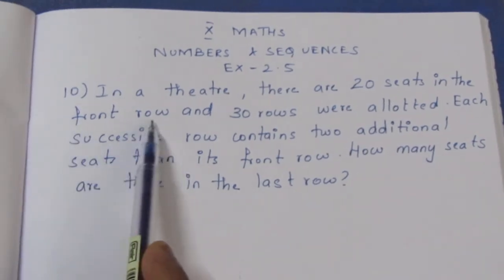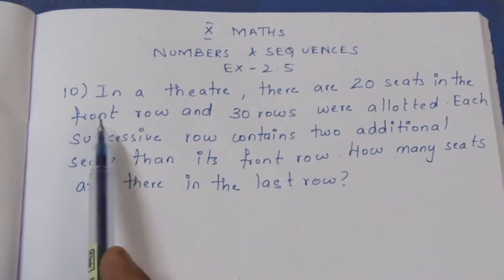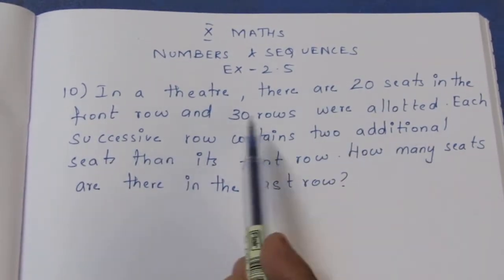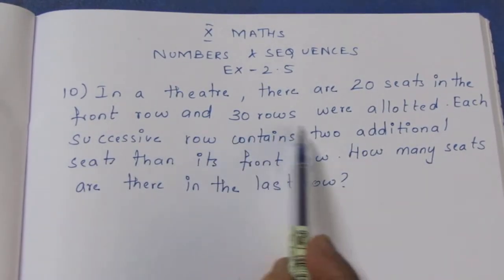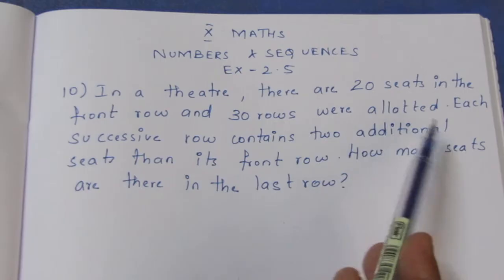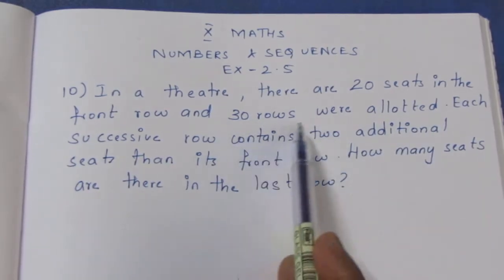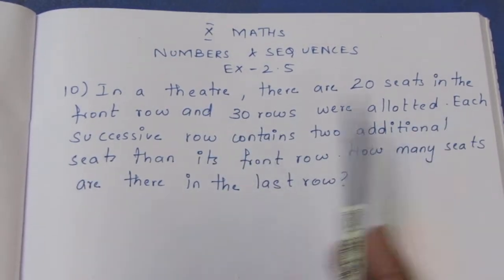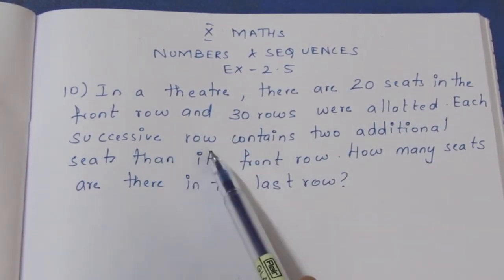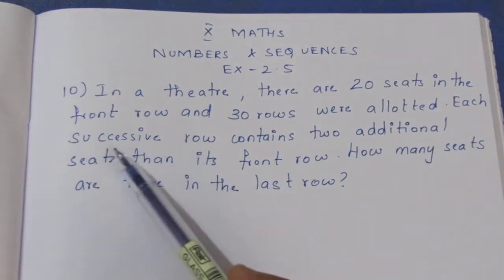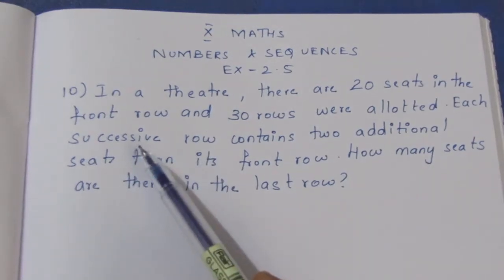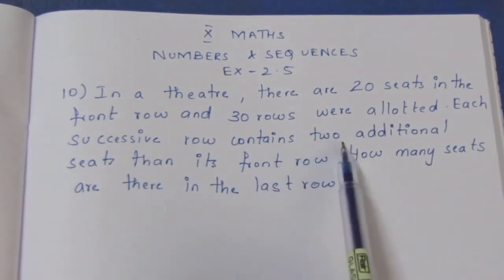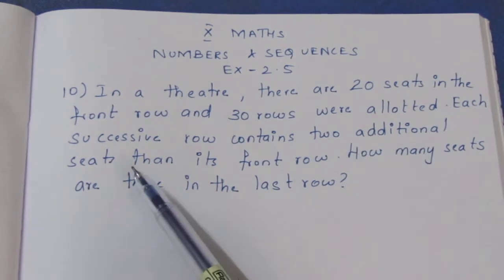The front row is the first row. In the first row, there are 20 seats. And 30 rows are allowed in total. Each successive row contains 2 additional seats.